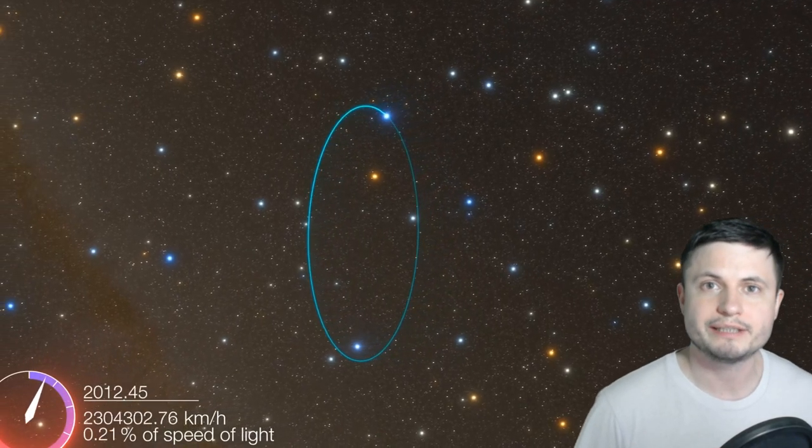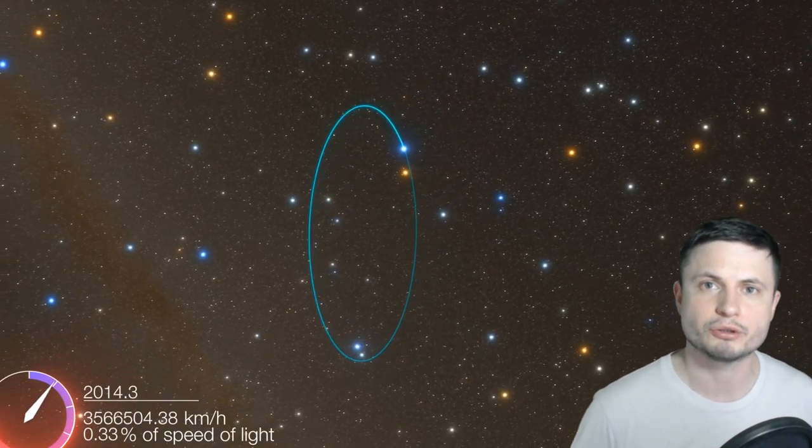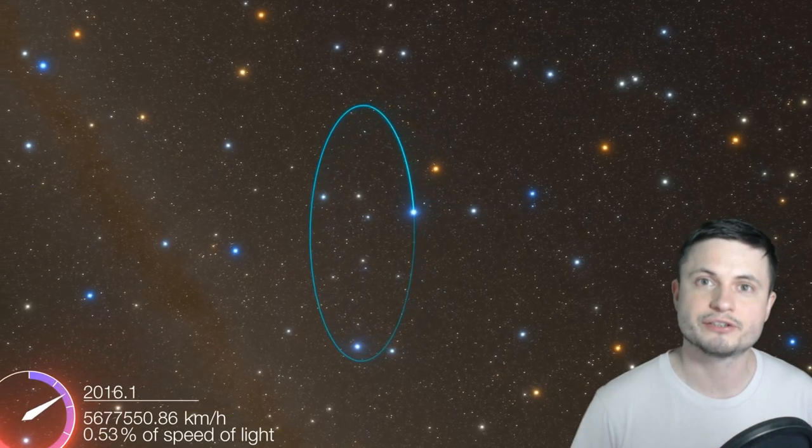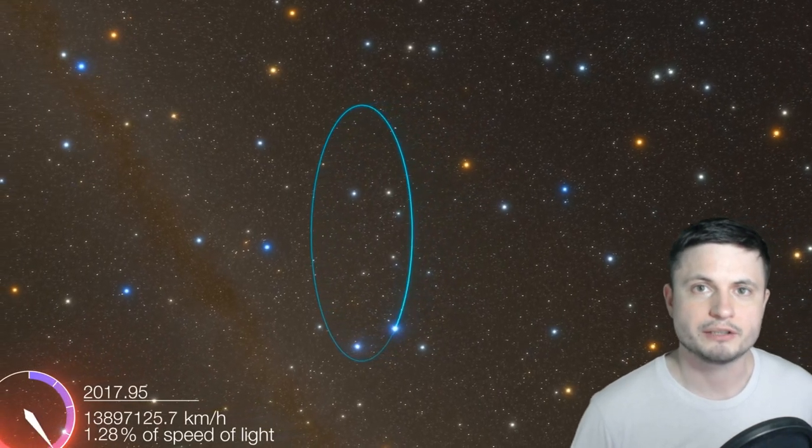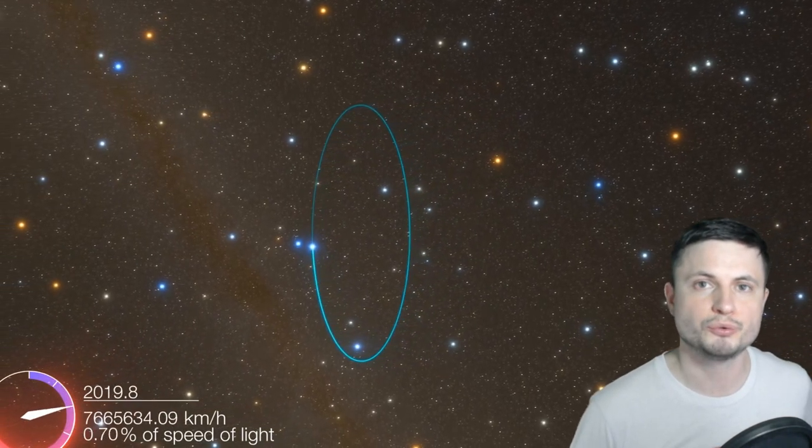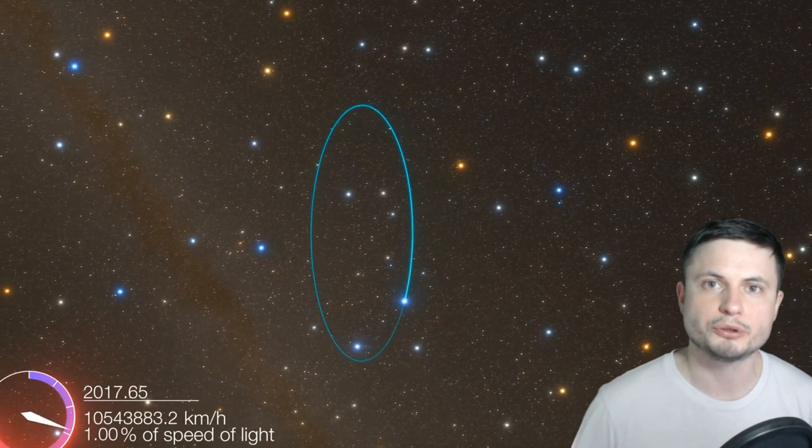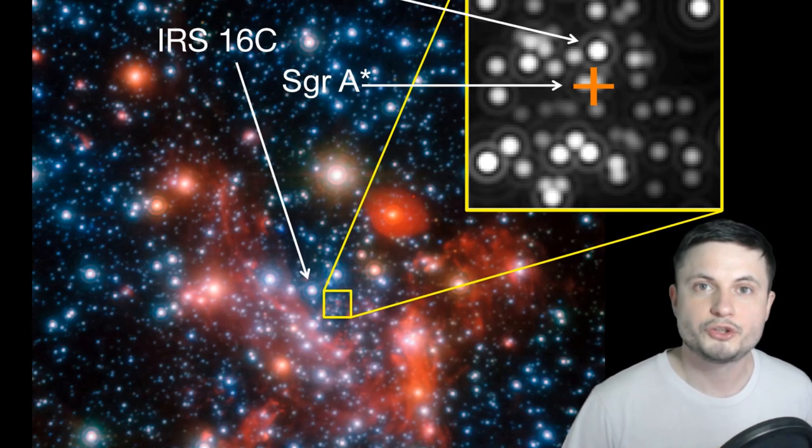So what you're looking at right here is a simulation of the previous record holder, the so-called fastest star in the galaxy. This is the star known as S2 and right around here at the closest approach of its orbit, it's able to reach the velocity of about two and a half percent of the speed of light or around 7500 kilometers per second.